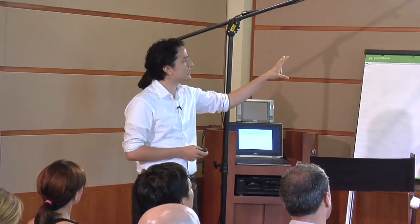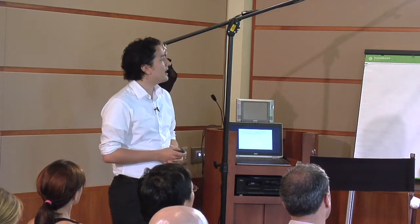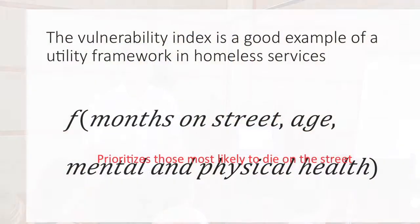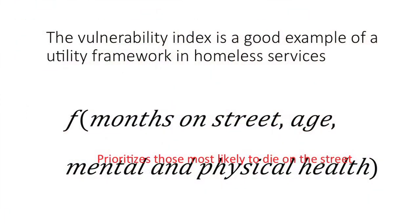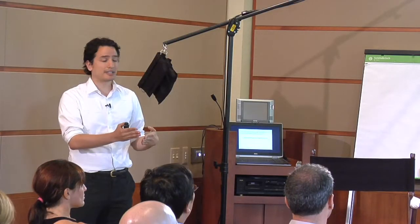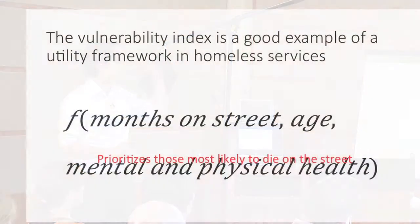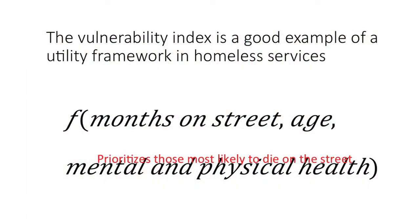The vulnerability index is a good real-world example of a utility framework, coming out of homeless services and the housing first movement. What the vulnerability index does is try to prioritize people based on how likely they are to die on the street, and give those people preference for moving into housing. This function takes into account the number of months an individual has been on the street, how old they are, mental and physical health, and other factors.